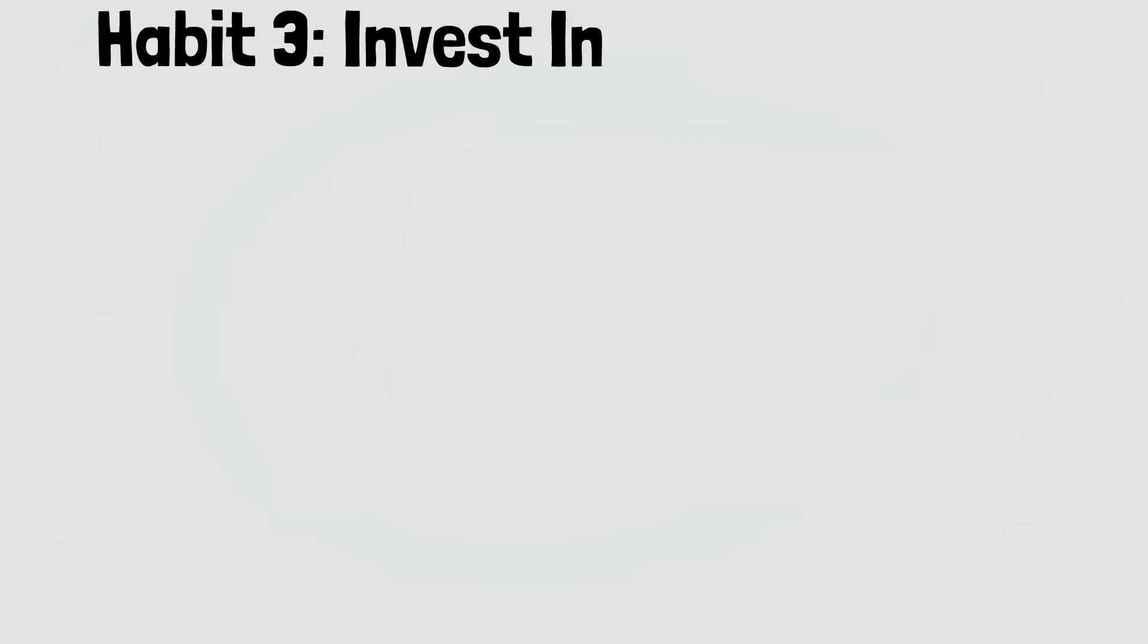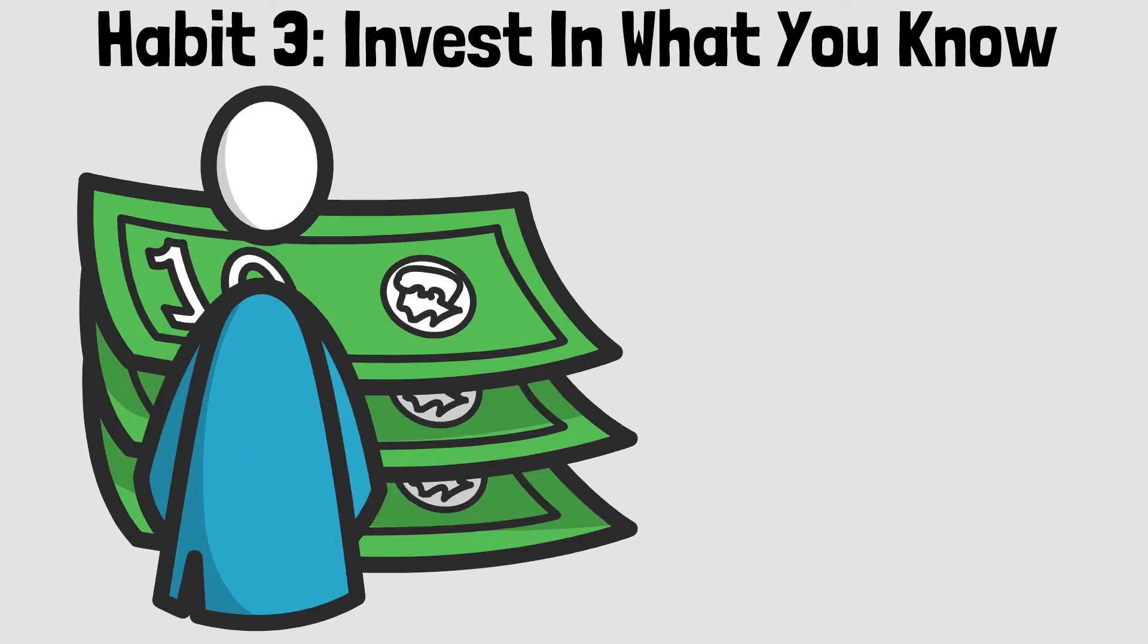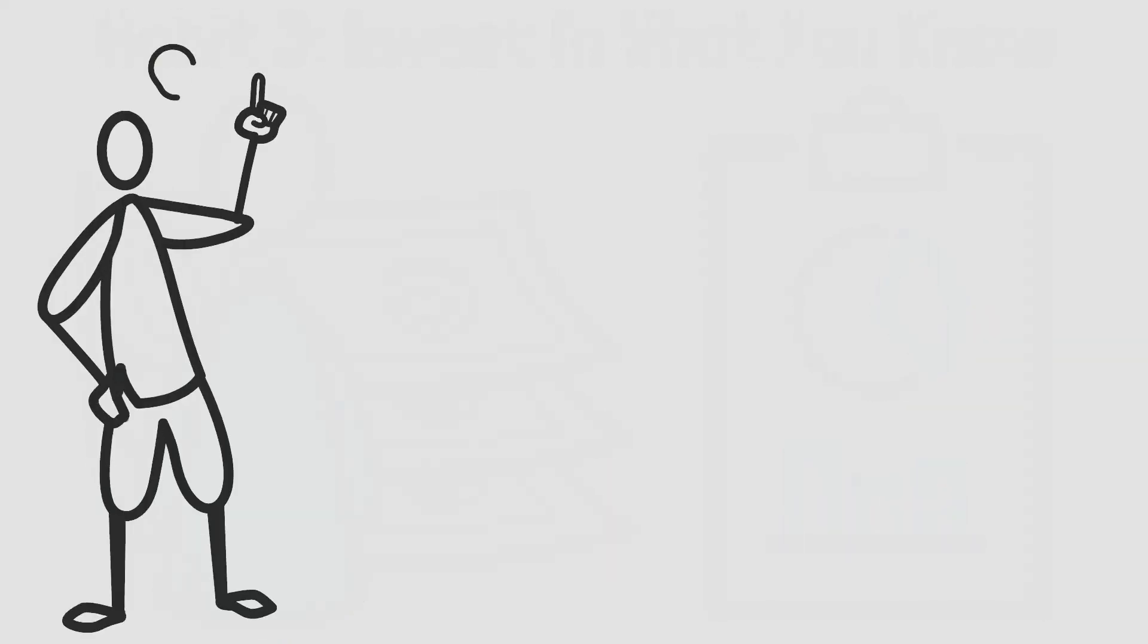Habit three: invest in what you know. As mentioned earlier, it's important to invest in financial assets so you can start letting your money work for you. When you generate portfolio income from your investments, you are on your path towards financial freedom. However, when it comes to investing, it's critical to invest in what you know. It's critical to know your circle of competence and stay within it.